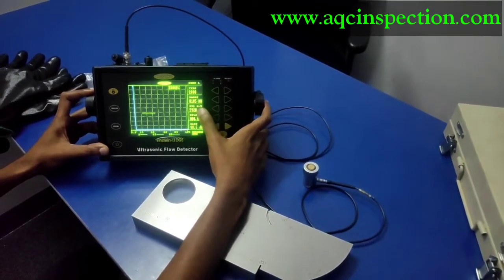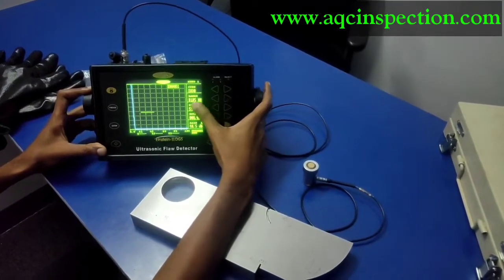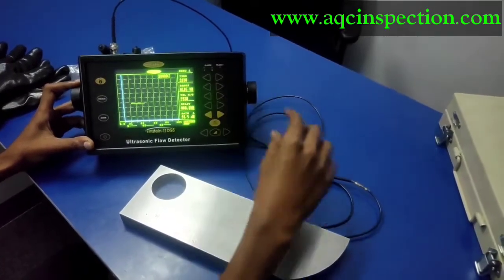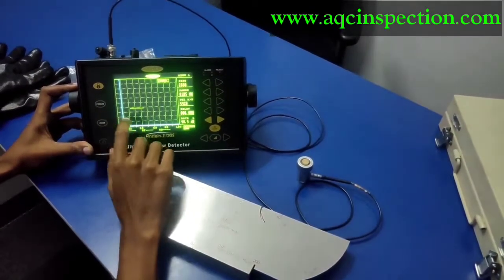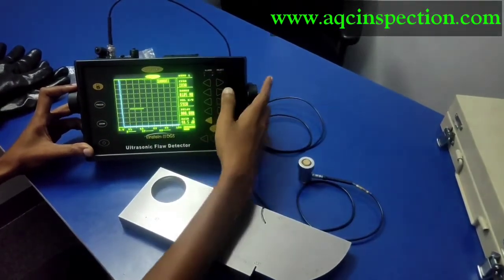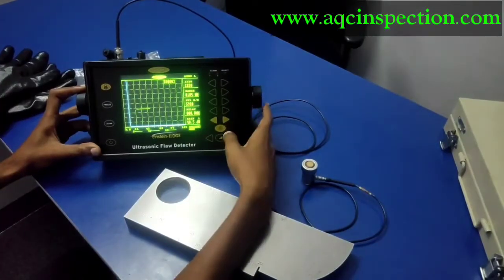This is the velocity for steel which is 5900 m/s. Then the range I have set is 105 mm because I am going to set four backwall echoes which is 25, 50, 75 and 100. So I have just put 105 mm instead of 100 so that I can see the backwall clearly.